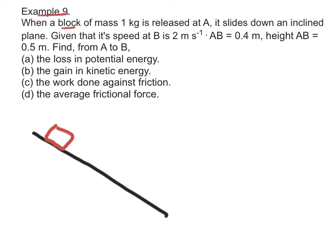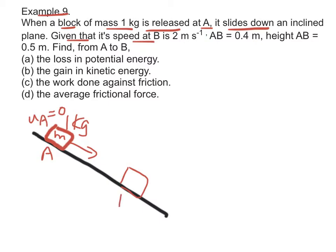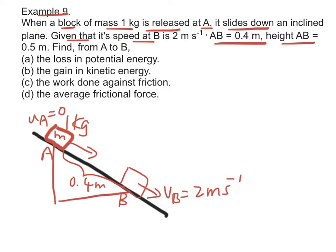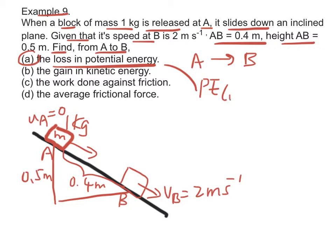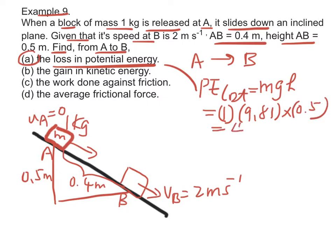Example 9: when a block of mass 1 kg is released at A, it slides down an inclined plane. Given that its speed at B is 2 m per second, AB equals 0.4 m, and the height of AB is 0.5 m. Find from A to B: the loss in potential energy is equal to mgh equal to 1 times 9.81 times 0.5, which is equal to 4.91 joules.